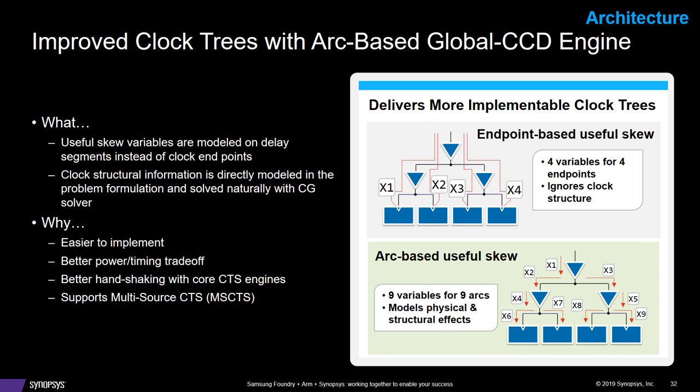CCD has gotten better. In some earlier incarnations of CCD, we had endpoint-based operation — operating on the entire path. That's somewhat limiting for optimization. The new arc-based version of CCD operates on each timing arc, so each cell and each net is a timing arc, and CCD can adjust those accordingly. It can find common paths — for example, if two flops at the bottom needed to be skewed, arc-based CCD would skew the buffer just above those two flops, finding that common point between them. This is also applicable to multi-source CTS or the mesh-appropriate version of CTS.